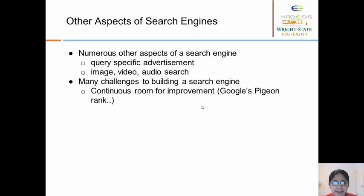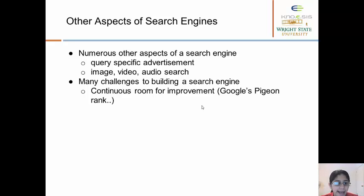There are numerous other aspects involved in building a search engine — for example, query-specific advertisement, where specific ads pop up for a given query. There is also image, video, and audio search, which requires using image features to find relevant results. The takeaway is that there are many challenges to building a search engine, but there is continuous room for improvement. Google continuously keeps making updates to their search algorithms, and there is a lot of research potential in this field. Thank you for your time.